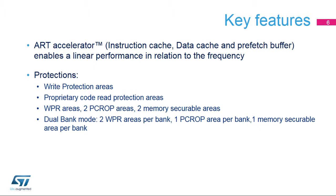The following protection mechanisms are supported. Write protection areas are used to protect against unwanted write operations. Proprietary code read protection (PC-ROP) areas protect a part of the flash memory against access from third parties — the protected area is execute-only, reachable only by the STM32 CPU as an instruction code area, while other accesses such as DMA, debug, and CPU data read, write and erase are strictly prohibited. The securable memory area defines an area of code which can be executed only once at boot, and never again, unless a new reset occurs.